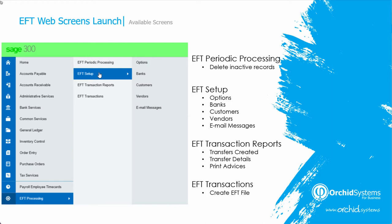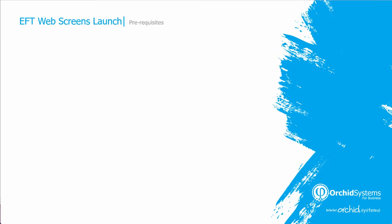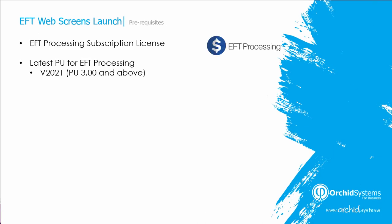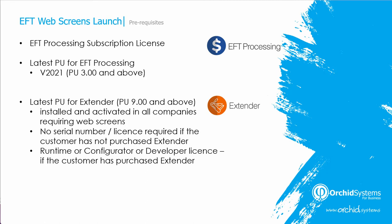And in the periodic processing, you are able to delete inactive records. The prerequisites for EFT web screens is that you need to be on an EFT processing subscription license, and you need to be on the latest PU for EFT processing. For version 2021, you need to be on PU 3 and above. And for extender, you need to be on PU 9 and above.